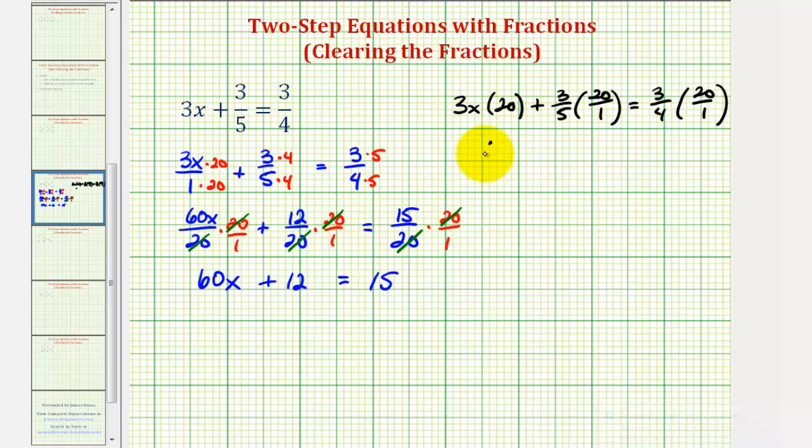Notice this first term would be 60x. Here we would simplify: 5 and 20 have a common factor of 5. There's 1 five in 5 and 4 fives in 20. The result would be 3 times 4, or 12. On the right side, 4 and 20 share a common factor of 4. There's 1 four in 4 and 5 fours in 20. We're left with 3 times 5, or 15. So this equation and this equation are the same.